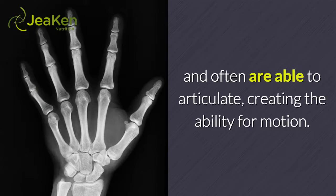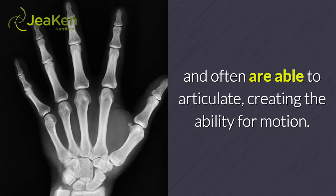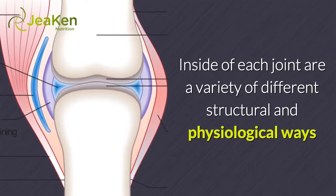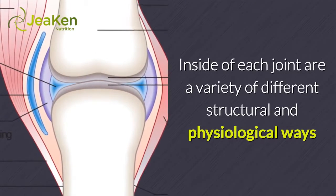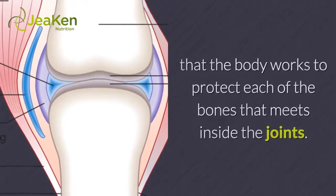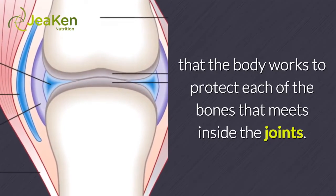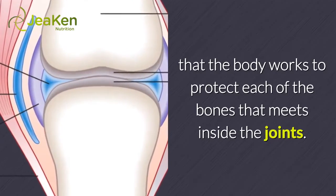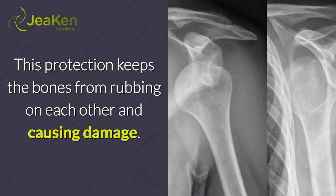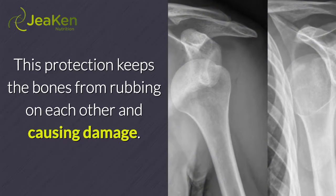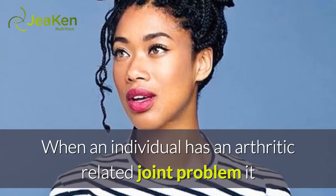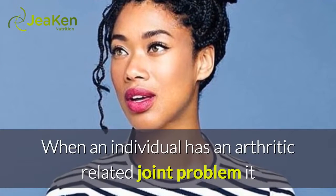A joint is an area of the body where two or more bones meet and are often able to articulate, creating the ability for motion. Inside each joint are a variety of different structural and physiological ways that the body works to protect each of the bones that meet inside the joints.